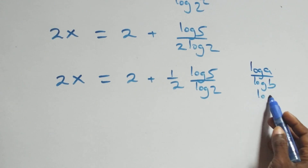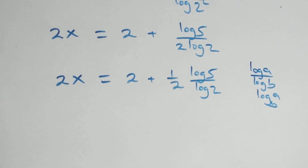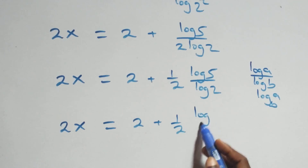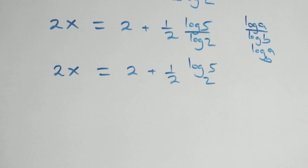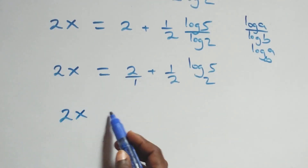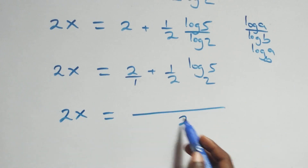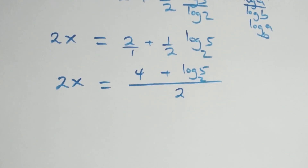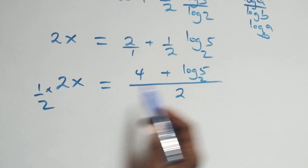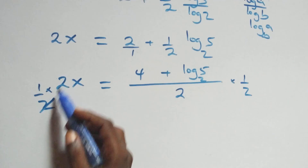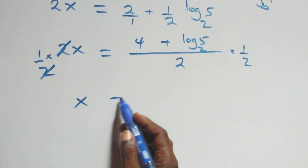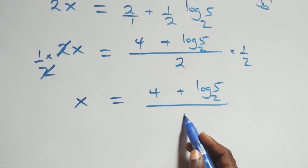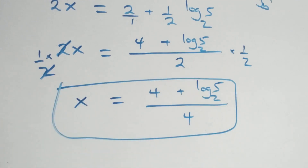Log 5 over log 2 is the same thing as log 5 to base 2 by the change of base formula. So all we have becomes 2x equals 2 plus one-half times log 5 base 2. Bringing this side together as one fraction with denominator 2, we have 2x equals the sum: 4 plus log 5 base 2, all over 2. The next step: multiply both sides by one-half, and we have x equals 4 plus log 5 base 2, all over 4.